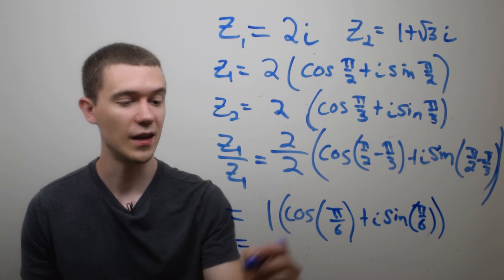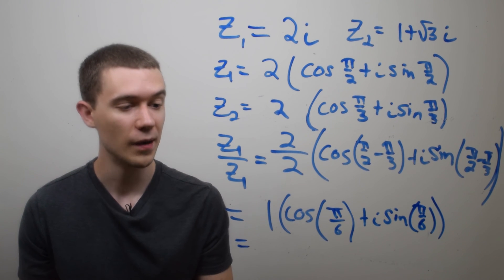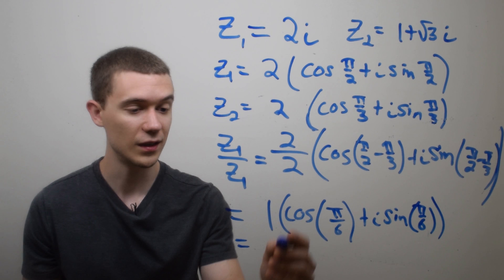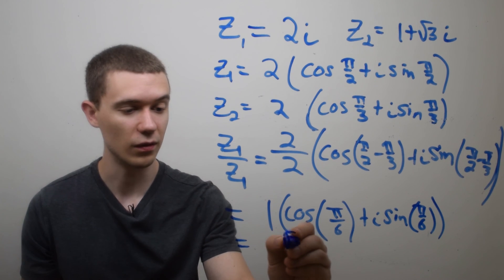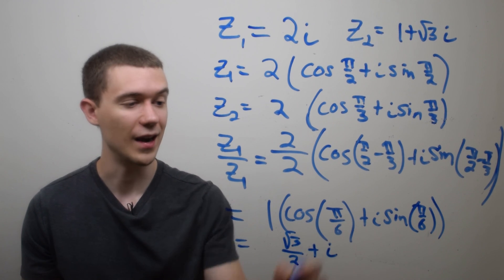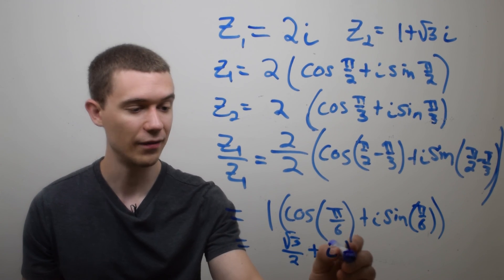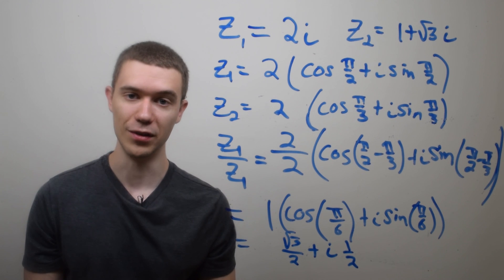Similar type of answer. In this case, I won't bother writing 1, but cosine of π/6, I believe is just √3/2, plus i sine of π/6 is 1/2. So this is the polar form of this complex division.